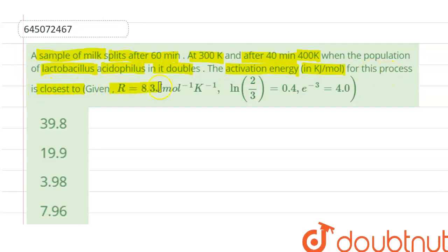is closest to: Given R = 8.3 joule per mole per Kelvin, log(2/3) = 0.4, e^(-3) = 4.0. Let us see here. The Arrhenius equation is used to calculate the activation energy.